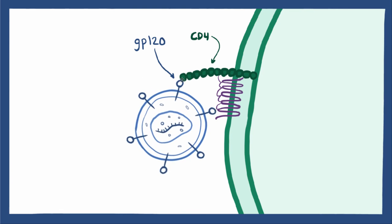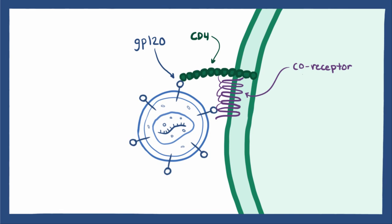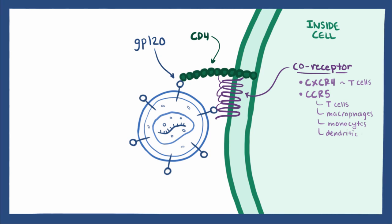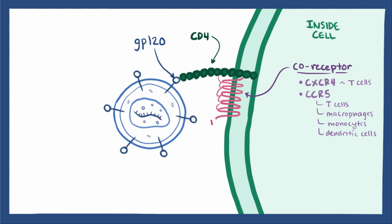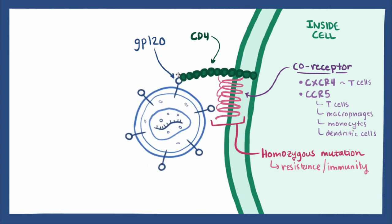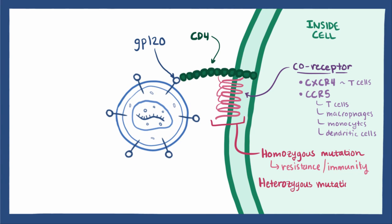HIV then again uses GP120 to attach to another receptor called a coreceptor. HIV needs to bind to both the CD4 molecule and the coreceptor to get inside the cell. The most common coreceptors that HIV uses are the CXCR4 coreceptor, found mainly on T cells, or the CCR5 coreceptor, found on T cells, macrophages, monocytes, and dendritic cells. These coreceptors are so important for HIV that some people with homozygous genetic mutations in their CCR5 actually have resistance or immunity to HIV, since HIV can't attach to them and get into the cell. Even heterozygous mutations, which lead to fewer coreceptors on the cells, can make it harder for the virus to spread and result in a slower disease progression.